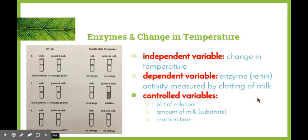The next one is looking at enzymes and change in temperature. Again, the independent variable is what we change, in this case the temperature. The dependent variable is the thing that we're measuring, which again is the enzyme activity. This time we'll be measuring the enzyme activity by having a look at how long it takes milk to clot. Some controlled variables include pH, the amount of milk which is the substrate, and the time that the reaction is allowed to proceed for.